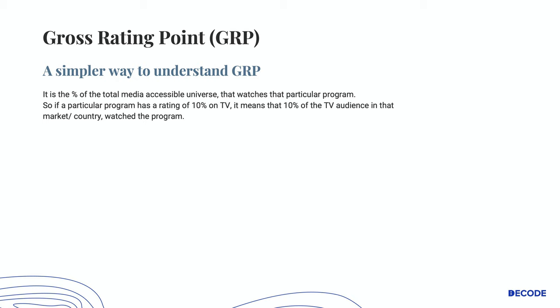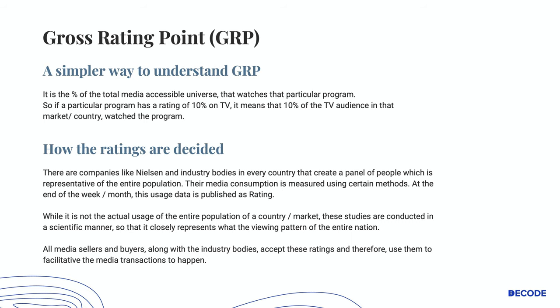So if a particular program has a rating of 10% on TV, it means that 10% of the TV audience in that market or country watch the program. You would obviously want to know how these ratings are decided. There are companies like Nielsen and industry bodies in every country that create a panel of people which is representative of the entire population. Their media consumption is measured using certain methods, and at the end of the week or month this data is published as rating data.